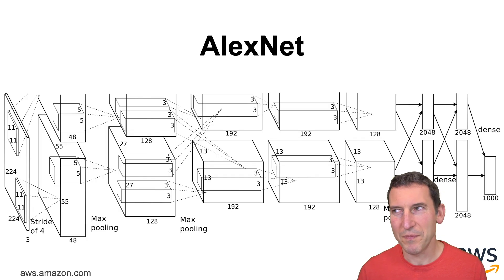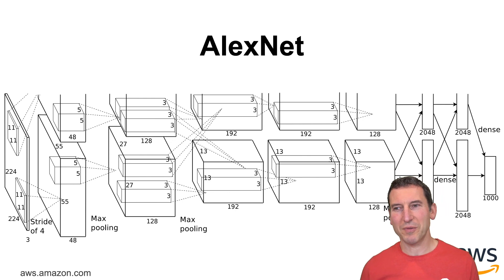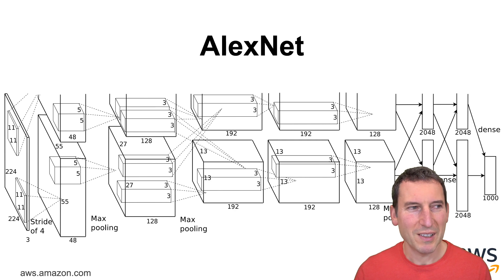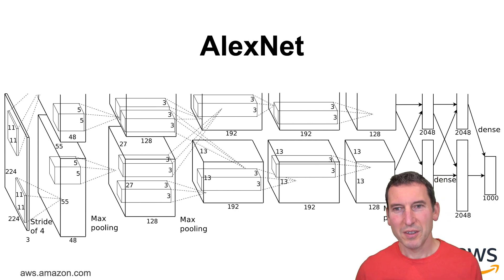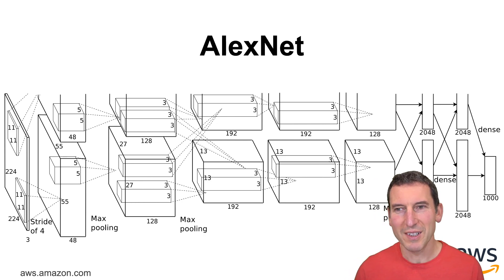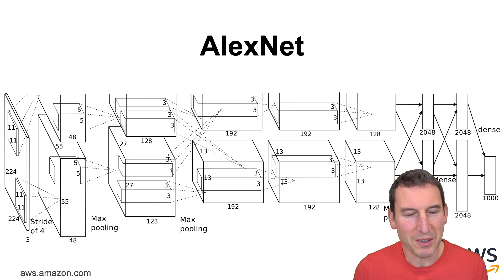And then along came AlexNet. If you look at it — cropped directly from their paper — it doesn't look too different from the previous one. The graphics look more fancy, but it actually looks very similar. You have convolutions, max pooling, convolutions, max pooling. The key difference is it uses max pooling as opposed to average pooling, and the other key distinction is that it uses dropout and ReLU.